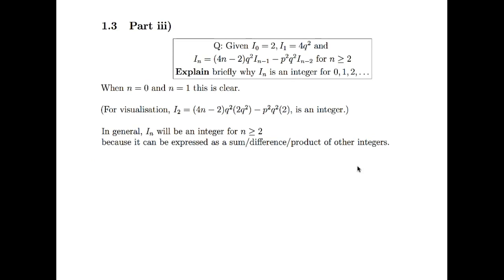Alright. So for part 3, given i_0 is equal to 2 and i_1 is equal to 4q squared and the reduction formula we had in the previous part, explain briefly why i_n is an integer. You can get away with just writing one or two sentences here, but I'll expand on the idea first because this is technically number theory, it's a bit hard. It's kind of obvious straight away that when n is equal to 0 or n is equal to 1, you have integers because they literally give it to you. Whereas for something like i_2, you can just do the reduction formula and you'll see that you get an integer times the integer times the integer minus another integer. So that's still going to be an integer.